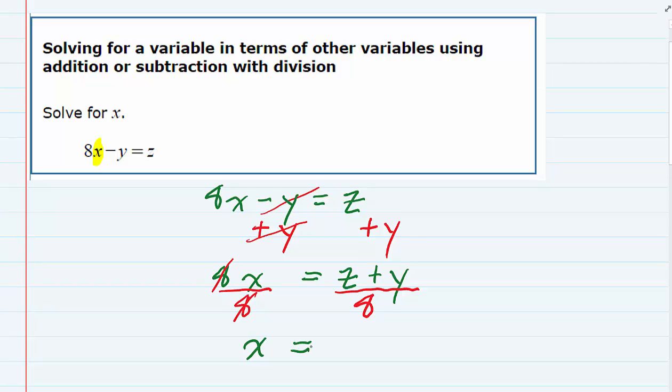On the right-hand side, no simplification can be done there. I've got a complex fraction with a z plus y in the top and an 8 in the bottom. And since it doesn't simplify, my answer is complete.